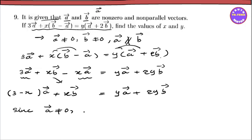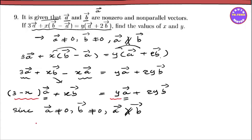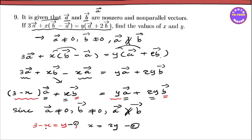If you have a vector, it will be equal to zero. So comparing coefficients: 3 minus x equals y, and 2 minus x equals y, leading to 2 minus y equals y.